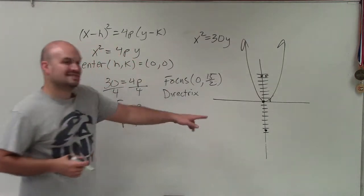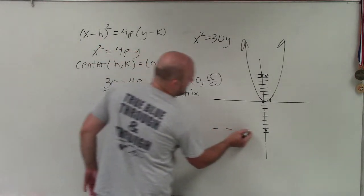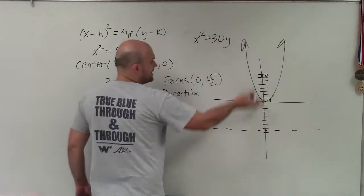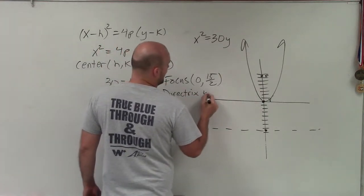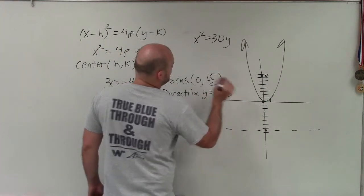But remember, the directrix is not a point. It's actually a line that is perpendicular to the axis of symmetry. So the directrix is y = -7.5.